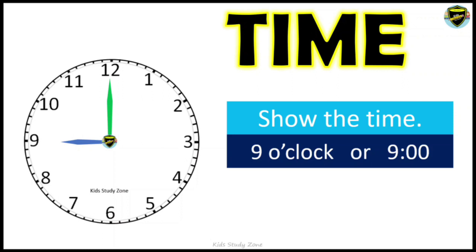Just to highlight and show the difference between the two hands, I have used two different colors — in a normal clock you will see both hands with the same color. Next is 7 o'clock: start from the center, show the minute hand towards number 12, and point towards number 7 to show the hour hand — it's 7 o'clock.